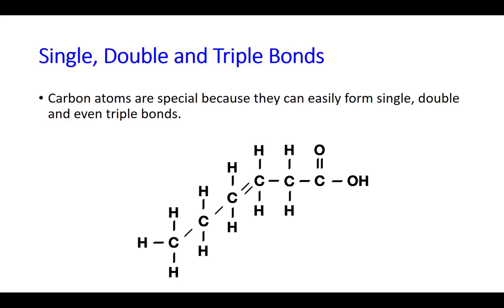The number of lines represents the number of bonds. For example, a carbon attached to a hydrogen in this molecule is a single bond. A carbon attached to another carbon with two lines is a double bond, and they can even form triple bonds.